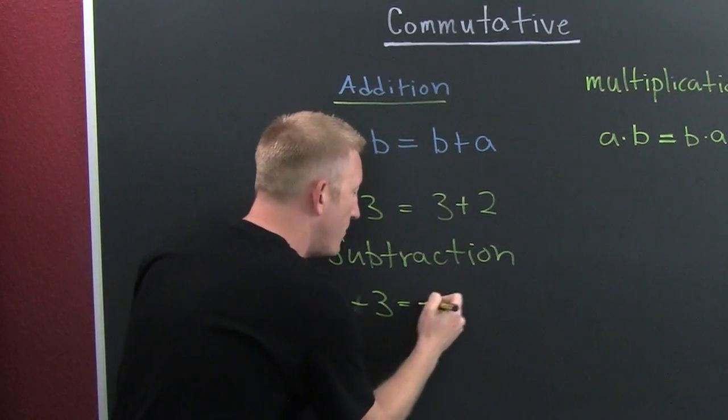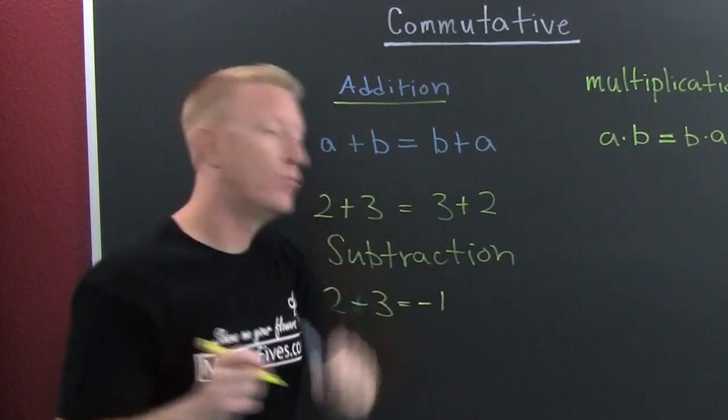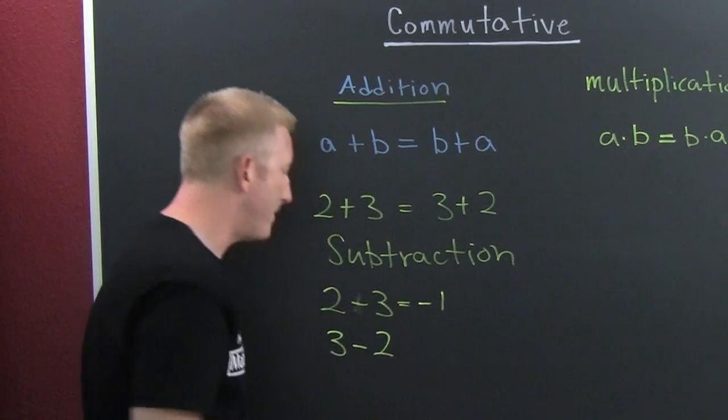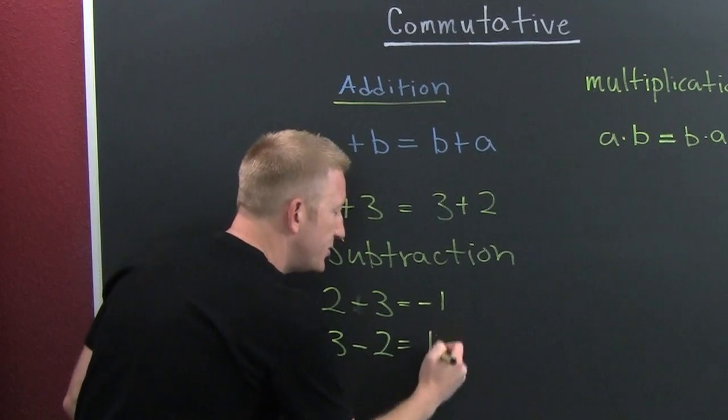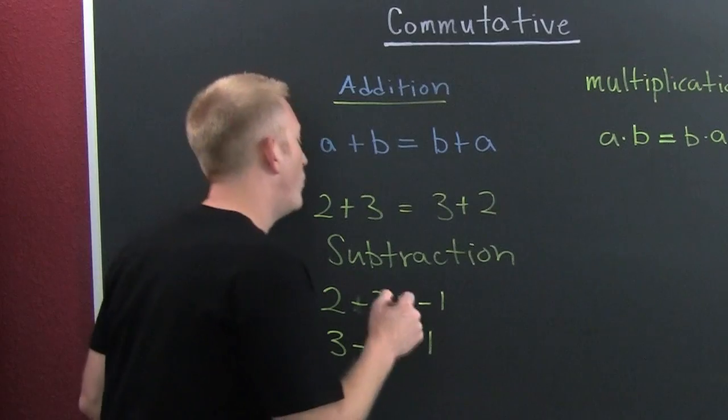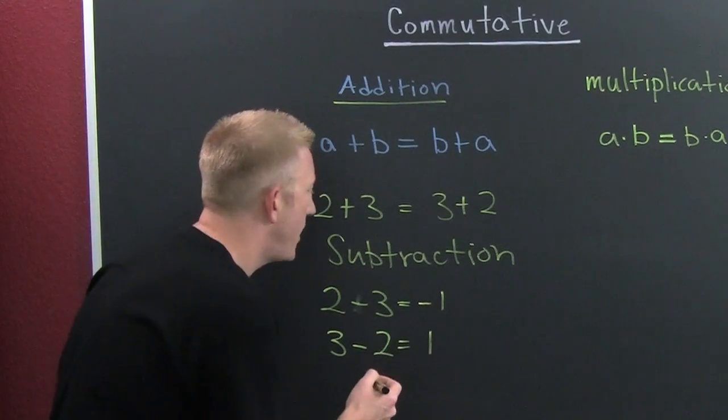Now what your book is saying when they say that it's not commutative: three minus two, that's going to get you a one. We see that that minus one and that one is not the same. But note what happens in this scenario.